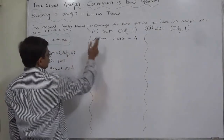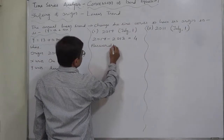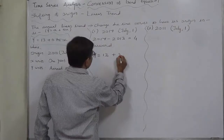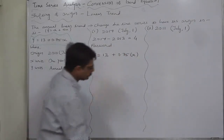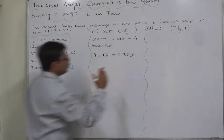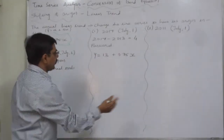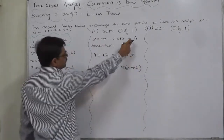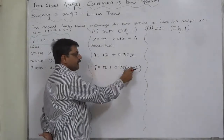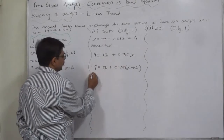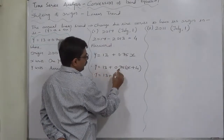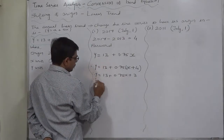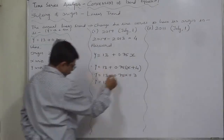The original trend is y-estimated equals to 13 plus 0.75x. We need to put forward the origin by 4 years, so it will become 13 plus 0.75 into (x plus 4). Since 4 is positive, we add it to x. Simplification gives 0.75x plus 3, and then 13 plus 3, because we add the two constants together.